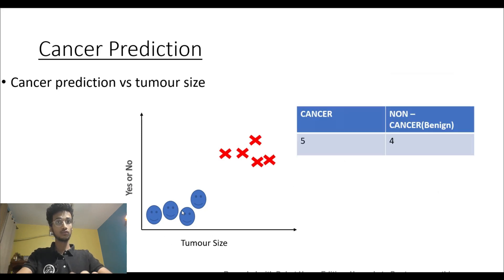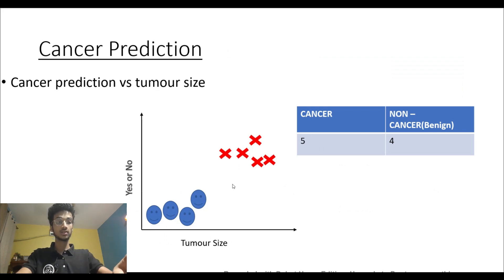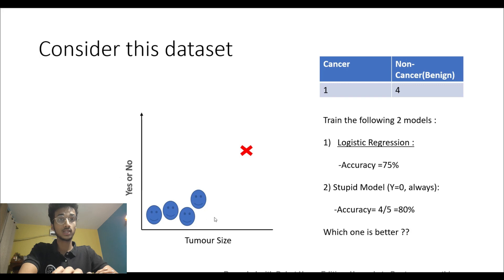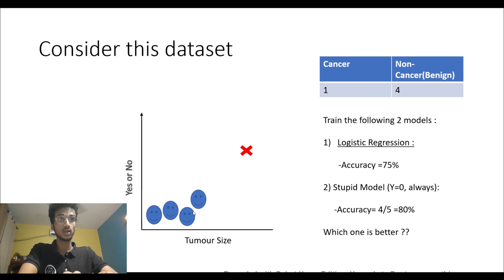Now consider this dataset. Here you have four smileys — four non-cancerous examples — and one cancerous tumor. This is a very bad dataset; it's not evenly distributed. Say you trained a logistic regression model and got an accuracy of 75%.